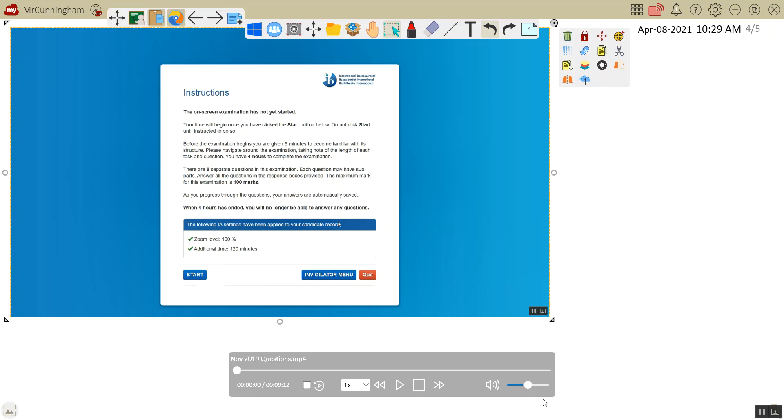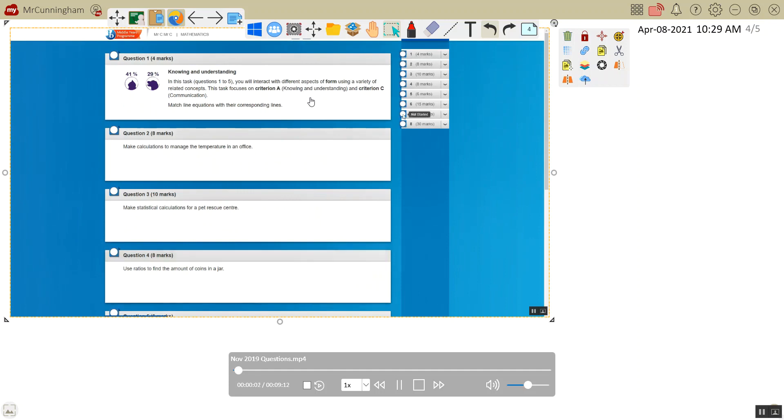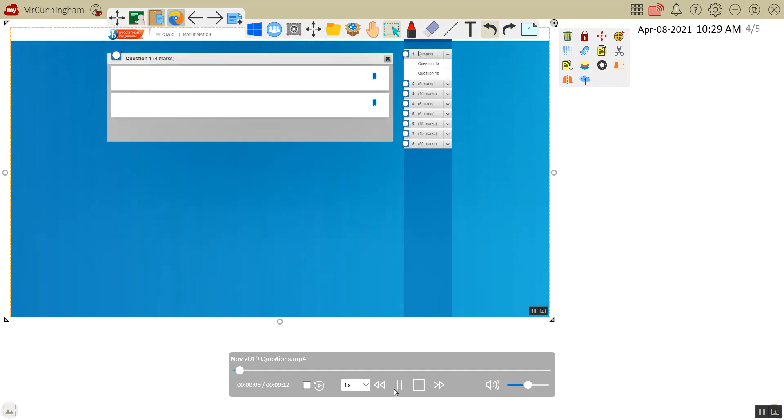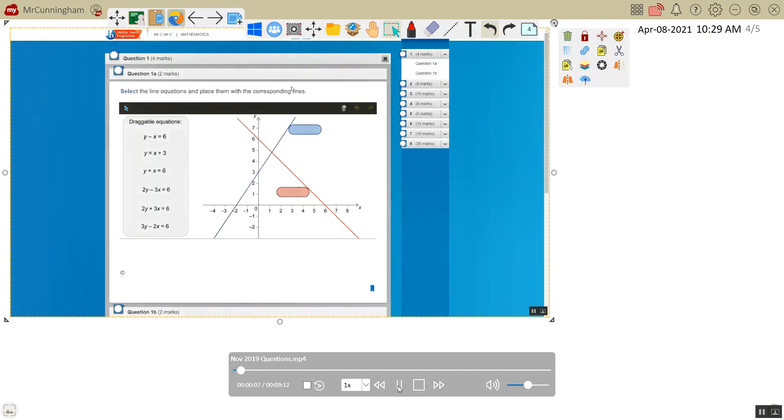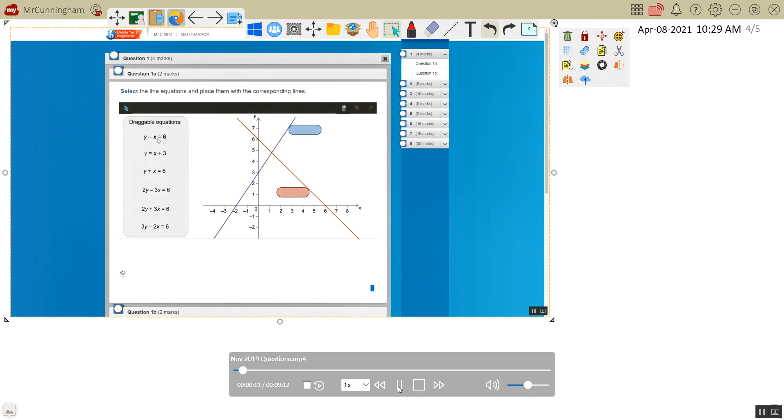This is question one of the 2019 November standard level mathematics assessment for MIP. The question is worth four marks. Select the line equations and place them with the corresponding lines. On the left you've got draggable equations which you drag to the correct point. Let's have a look at what the possible answer is.